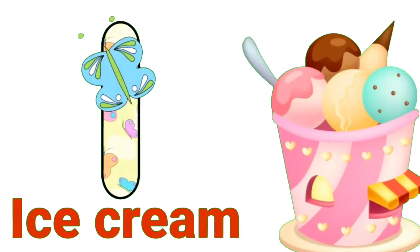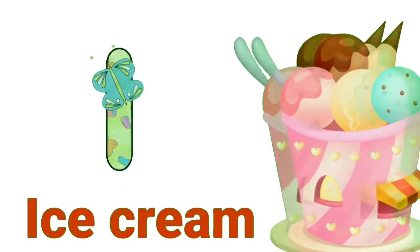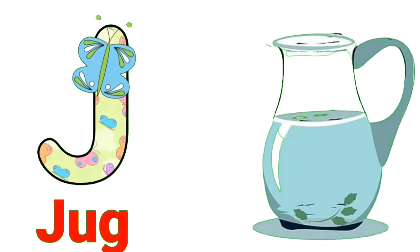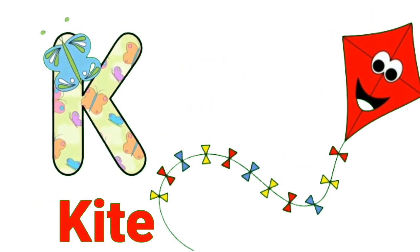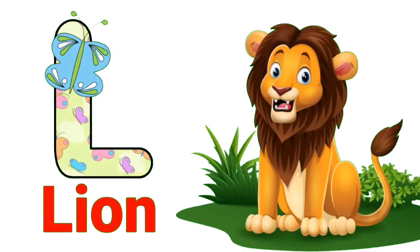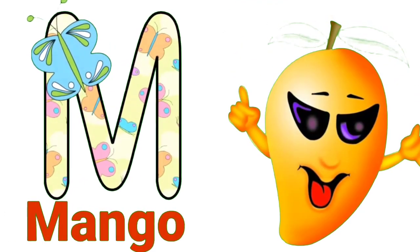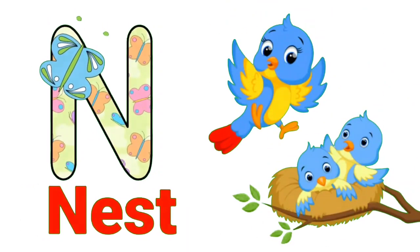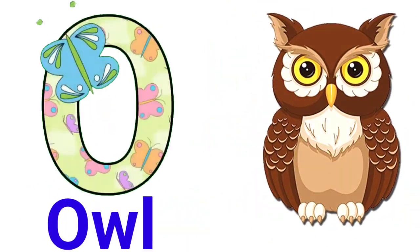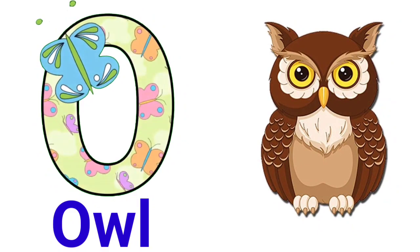I for ice cream, J for jug, K for kite, L for lion, M for mango, N for nest, O for owl.